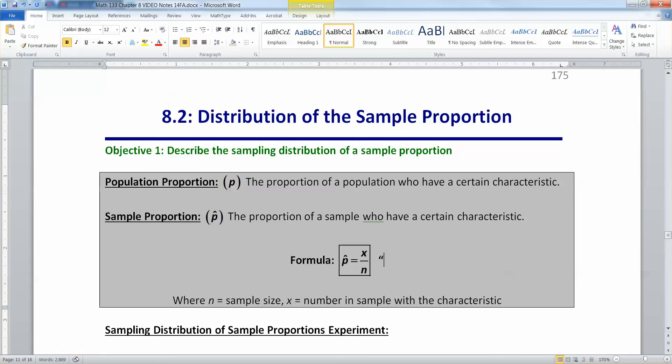Notice what I'm saying, P hat. It has a little hat on its head. So it's P hat. It's the sample proportion. X is the number that has the characteristic you want and N is the total sample size.